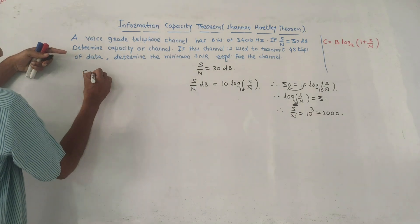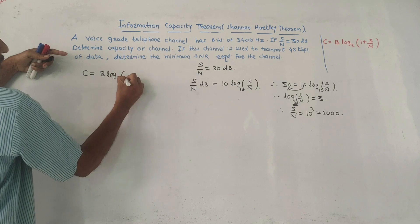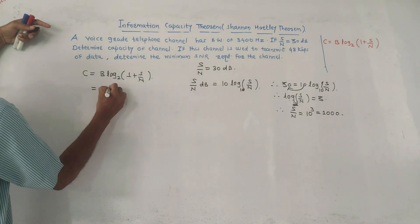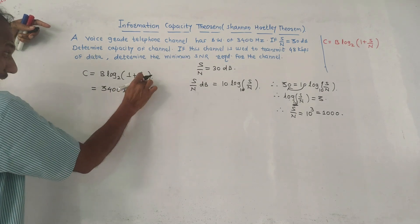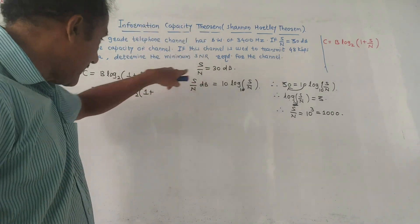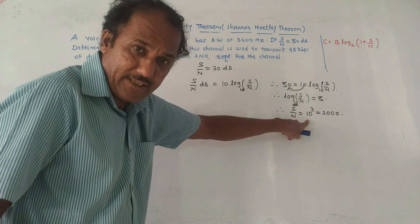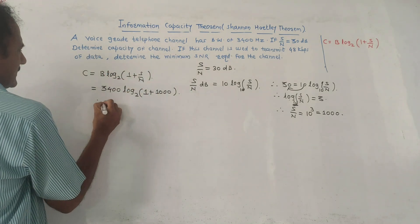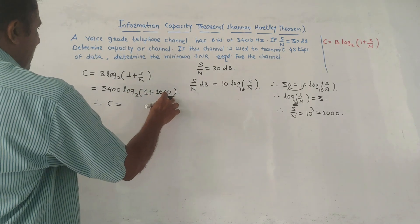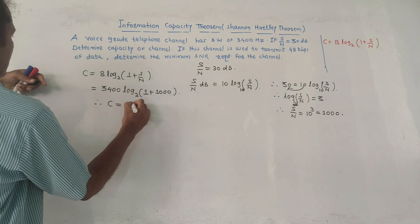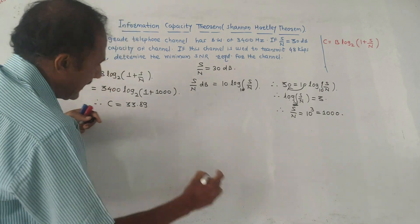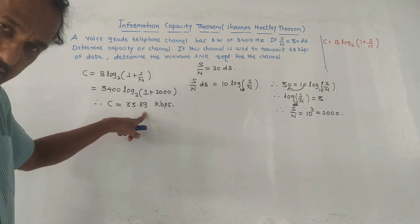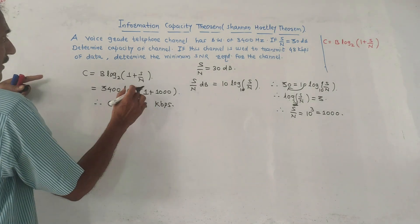Now using the channel capacity formula C = B log₂(1 + S/N), put in the values: bandwidth B = 3400 Hz and S/N = 1000. So C = 3400 × log₂(1 + 1000) = 3400 × log₂(1001). Solving this gives C = 33.89×10³ bits per second, that is 33.89 kbps. This is the answer to part one.